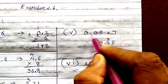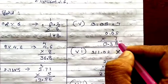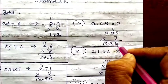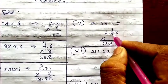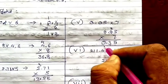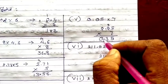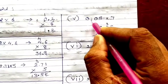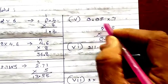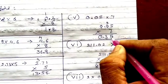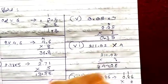Then 0.05 into 7. 7 fives are 35, carry 3. 7 zeros are 0, plus 3 is 3. 7 zeros are 0. You get 0, 3, 5. Where to put the decimal? After the decimal there are 2 digits, so leave 2 digits from the last and place your decimal there.